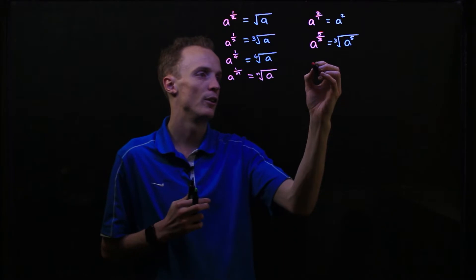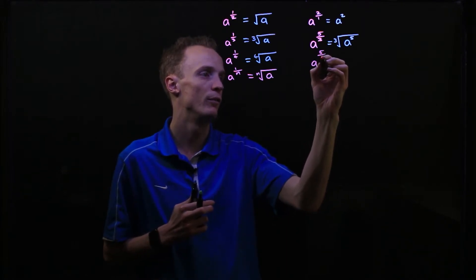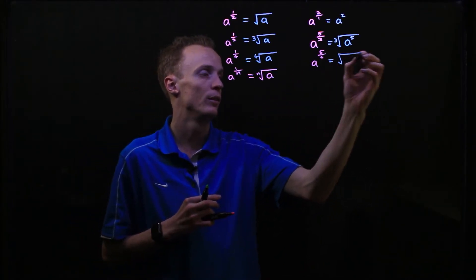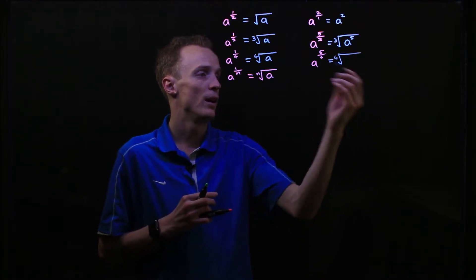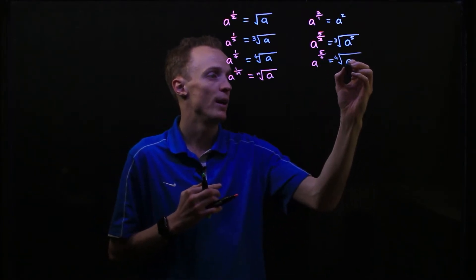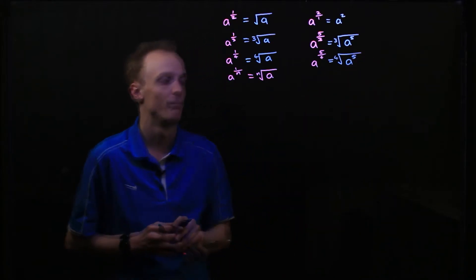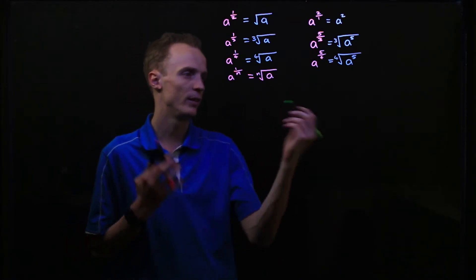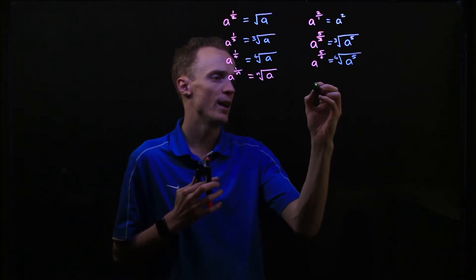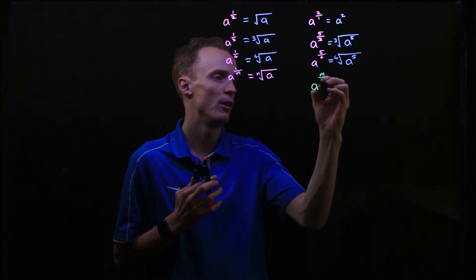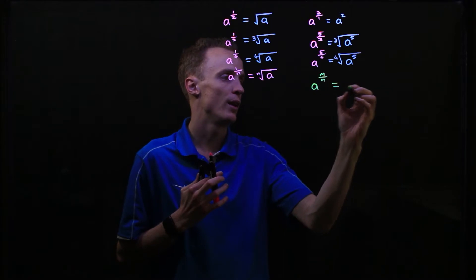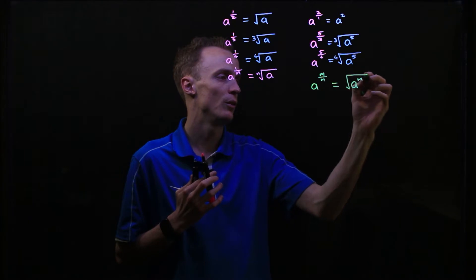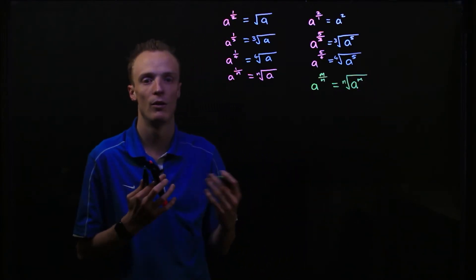If we had the value of a to the power of 5 over 4, equally this denominator value tells us that we need to find the fourth root, and the numerator tells us that we need to multiply the base value of a by itself five times. So through this patterning we come up with this generalized rule: if we have a base value to the power of m over n, the m value tells us how many times we must multiply that base by itself, and the n value tells us what root we need to find of that value.